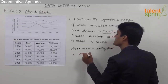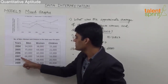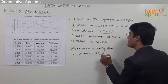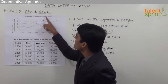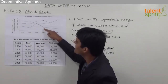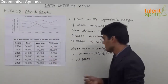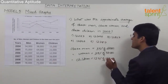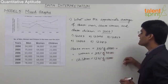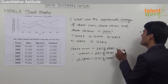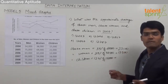Obese women in 2007: the percentage is 25% and the number of women is 54,000, so 25% of 54,000. For obese children in 2007, the data point lies exactly between 10 and 15, so we take it as 12.5%. That is 12.5% of 16,000. Now simplifying: 35% of 66,000 equals 23,100, and 25% of 54,000 is 13,500.